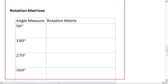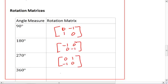If we're rotating 90 degrees, the rotation matrix is 0, 1, negative 1, 0. If it's 180 degrees, we get negative 1, 0, 0, negative 1. If it's 270 degrees, we get 0, negative 1, 1, 0. And if it's 360 degrees, we get 1, 0, 0, negative 1.